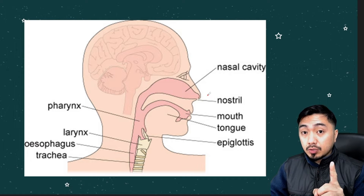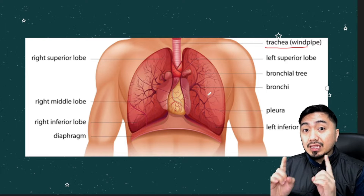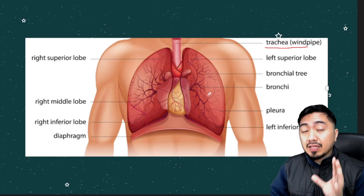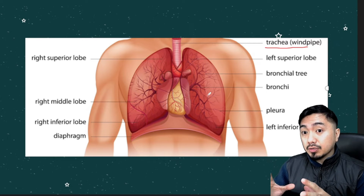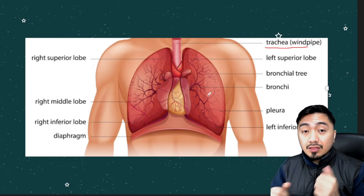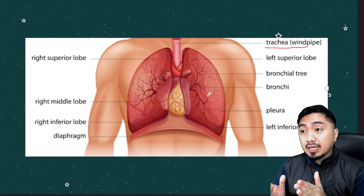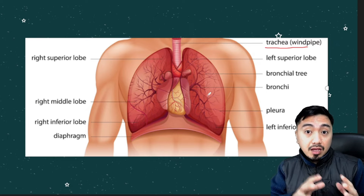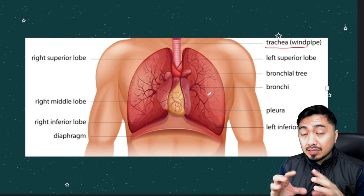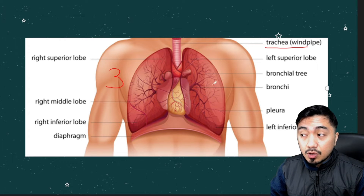Going down to the lower respiratory tract, we have here your trachea, which is also called the windpipe. It divides at the carina into the left and the right bronchus. The air will flow towards the bronchus, towards the bronchioles, and lastly the alveoli, where the oxygen and carbon dioxide exchange happens. These parts are located inside the lungs. We have two of them — the right and the left lung. Each lung has a different number of lobes: the right lung has three lobes, while the left lung has two lobes.